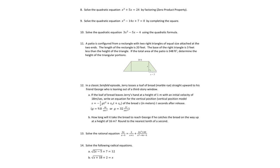Number 8 says solve the quadratic equation by factoring using the zero product property. I'm going to bring 24 over to the left side by subtracting. Then I need to find what adds to 5 but multiplies to negative 24 — that's positive 8 and negative 3. The zero product property says we set each factor equal to zero: x plus 8 equals zero gives x equals negative 8, and x minus 3 equals zero gives x equals 3. Those are our two answers.